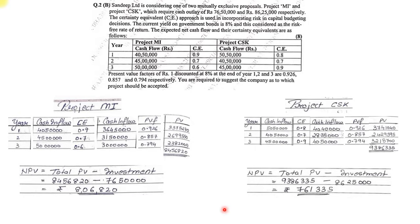These are the first four questions under question number two of the Strategic Financial Management April 2023 paper. This was part one of our video series based on solving the 2023 April paper. Stay tuned for other videos where we will continue and solve the remaining parts of the university paper. Thank you.